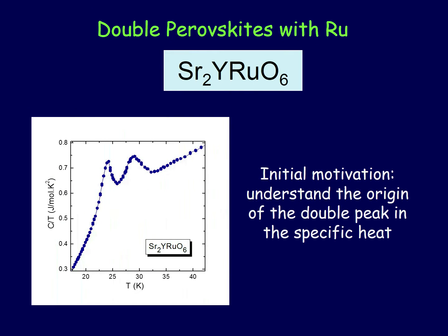The purpose of this work is to study a double perovskite with magnetic frustration: strontium yttrium ruthenium oxygen (Sr₂YRuO₆). The initial motivation for the work is to understand the origin of a double peak in the specific heat.